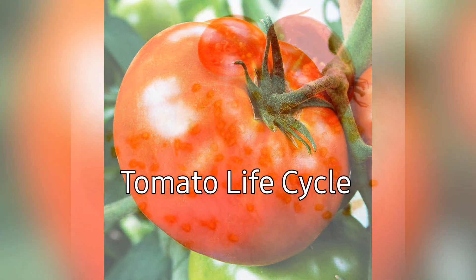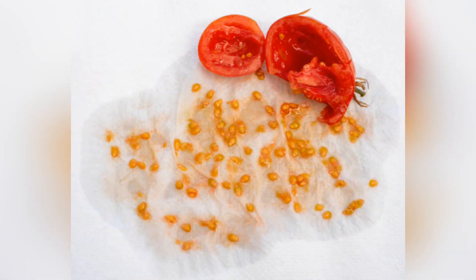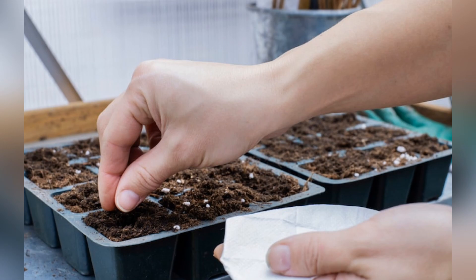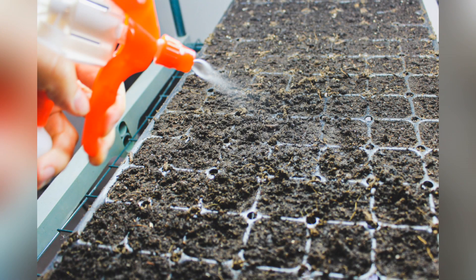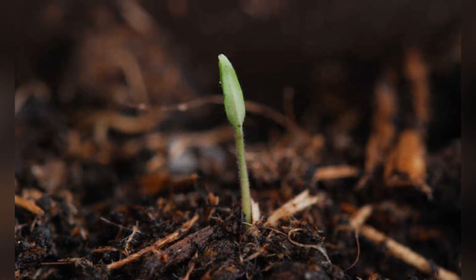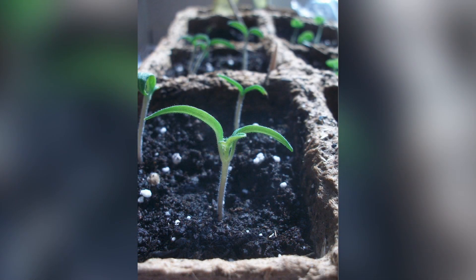Seed germination. The life cycle starts with a tomato seed. When the seed is planted in soil and provided with water, warmth, and light, it undergoes germination. A tiny shoot emerges from the seed, developing into a seedling.